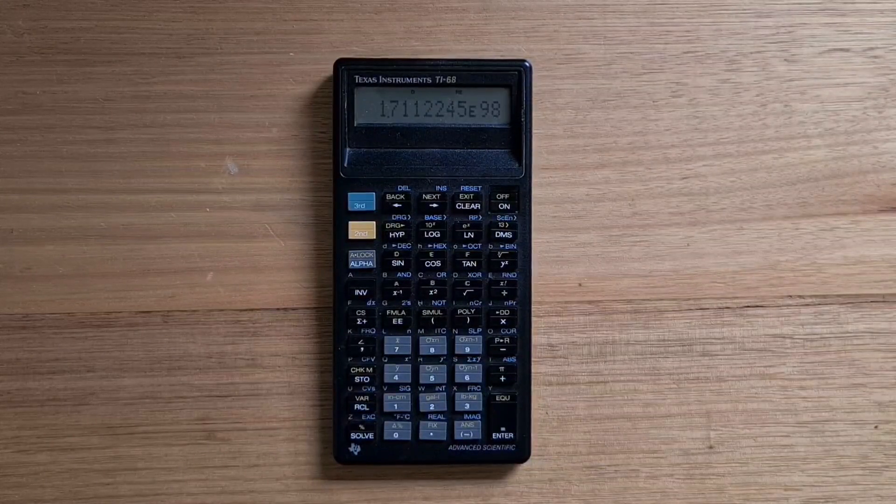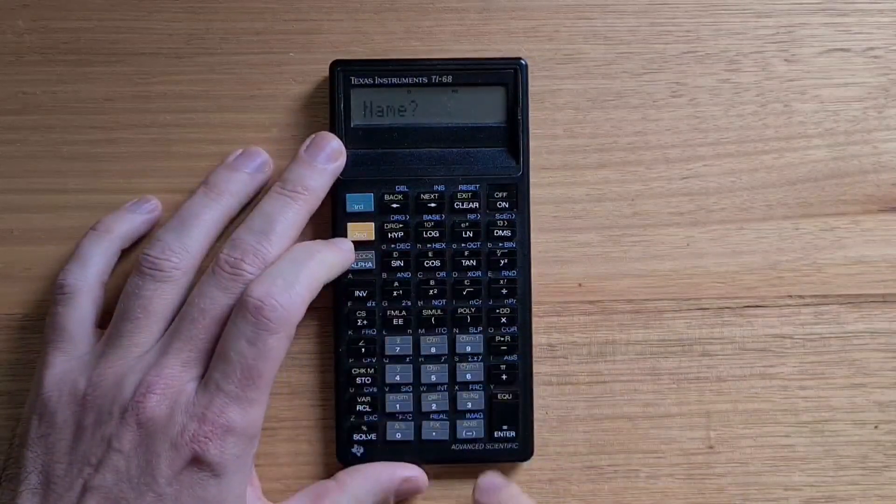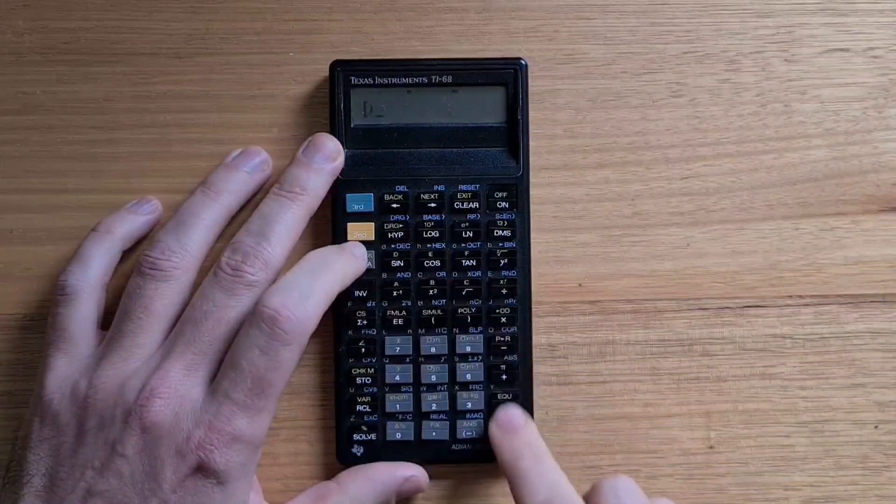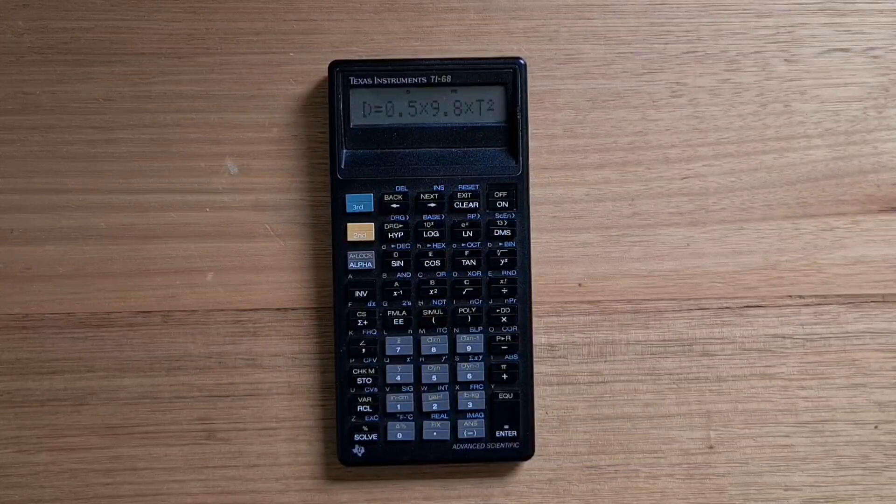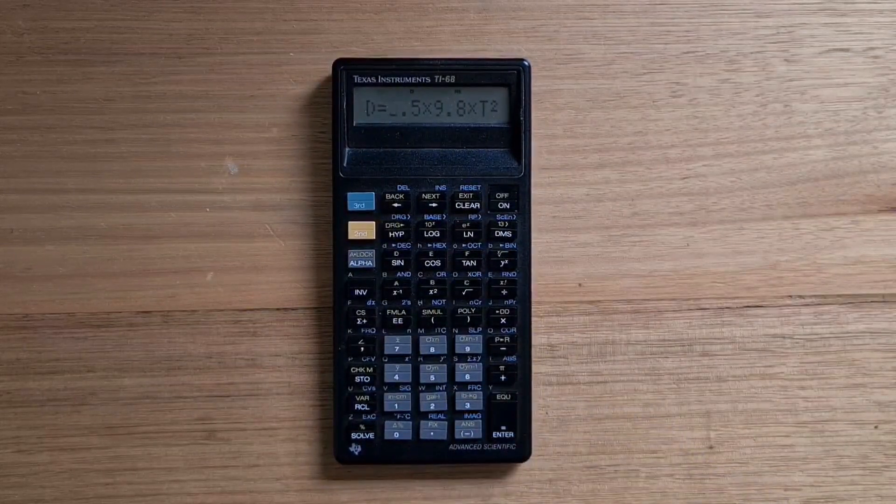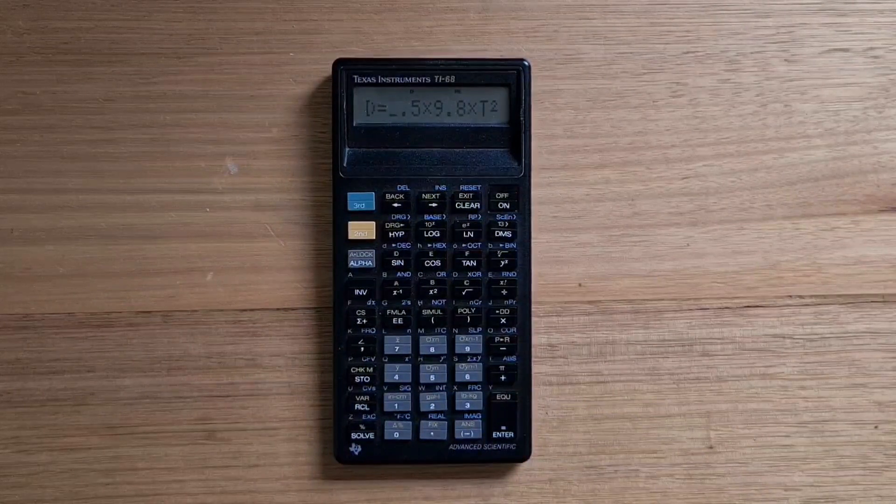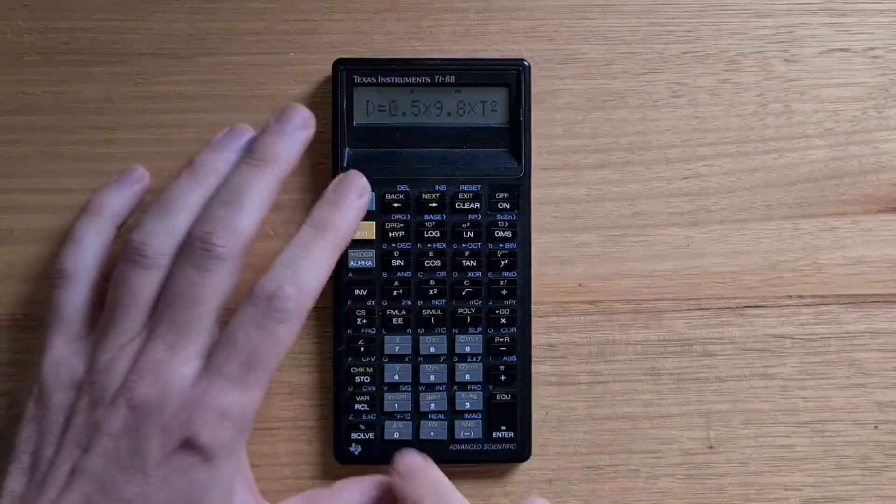To begin a formula, you hit the formula key and then enter its name. I'm going to use my favorite example of the fall distance equation that calculates the distance an object falls under gravity in time t. Because I've already defined this, the formula comes up, I can edit it now, or just hit solve.